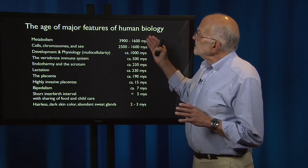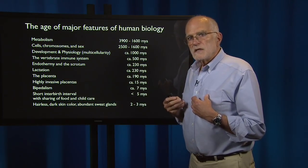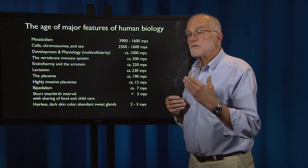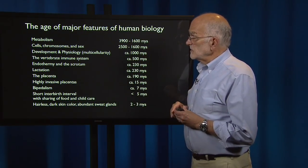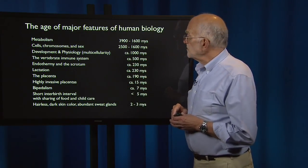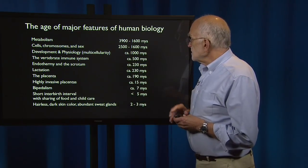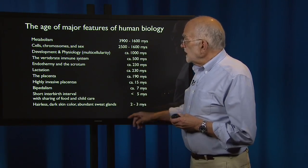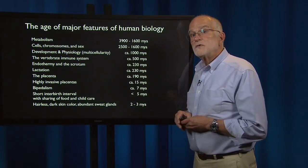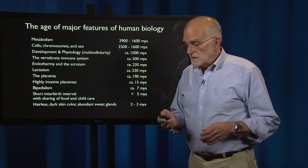Different parts of our body evolved at very different points in time — we are a mosaic of features of very different ages. Metabolism is almost four billion years old; multicellularity about one billion; our vertebrate adaptive immune system about half a billion; the placenta about 190 million years old; bipedalism about seven million; and our hairless skin, dark skin color, and abundant sweat glands are two to three million years old. The take-home is that we are a mosaic of parts with very different ages.